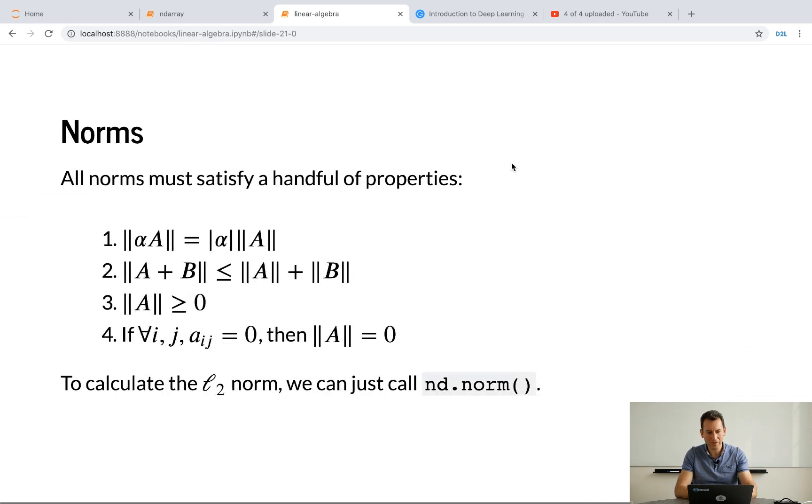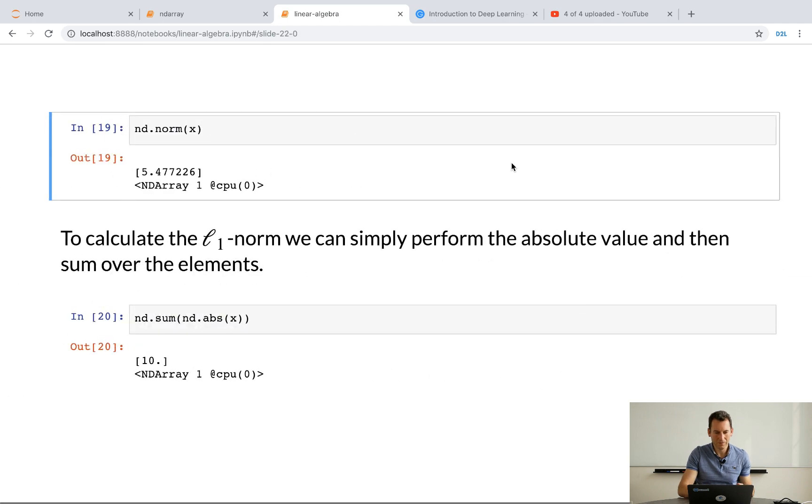Last thing are norms. And that's exactly what we discussed before. So, they need to satisfy triangle inequality and so on. And if we want to invoke the L2 norm, I just call nd.norm. So, nd.norm of x. There we go. Now, if I want to compute the L1 norm, I could do this. I could just invoke nd.sum, nd.abs. Or I could just invoke the norm with a different power. That would also work. So, abs is absolute value, as you would have already suspected. And nd.sum is what we did before.